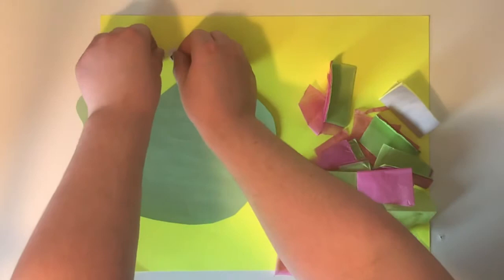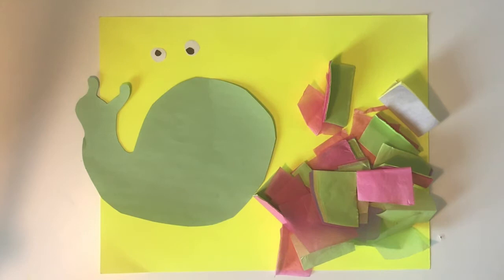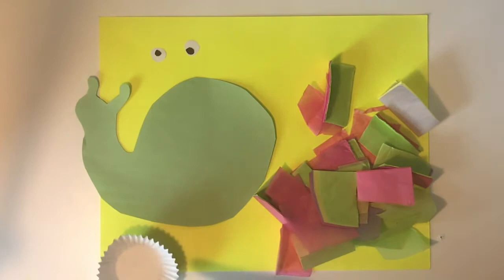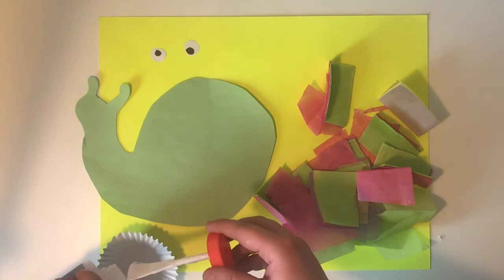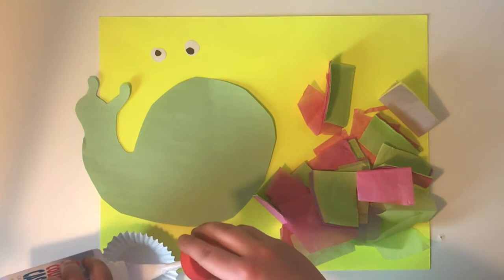Then the other thing that you're going to need is some glue. It's best if you have something to put the glue inside of here. I have a muffin cup that I'm going to put it inside of, because we're going to be dipping our pieces of tissue paper inside the glue here. So you can just get a little bit of help with this and pour some glue into the muffin cup.